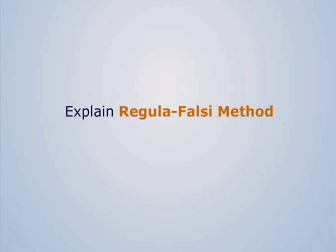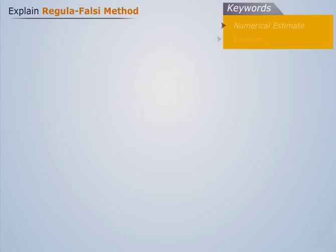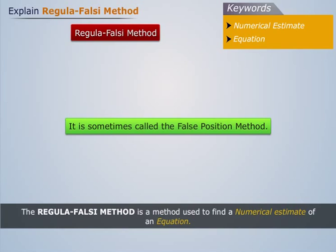Explain Regula-Falsi Method. The Regula-Falsi method is a method used to find a numerical estimate of an equation. It is sometimes called the False Position Method.